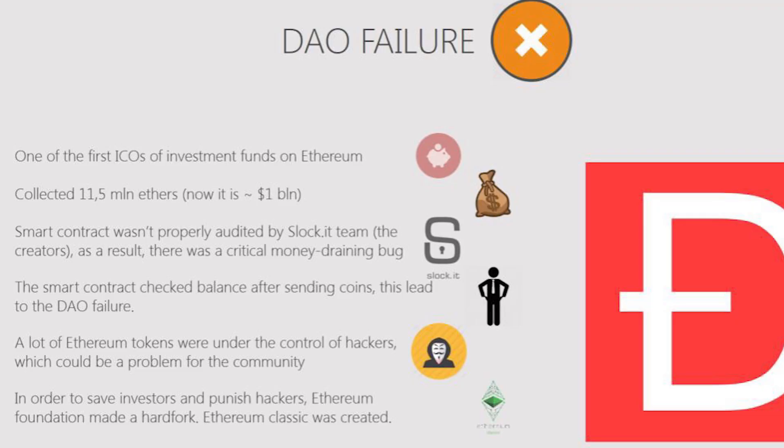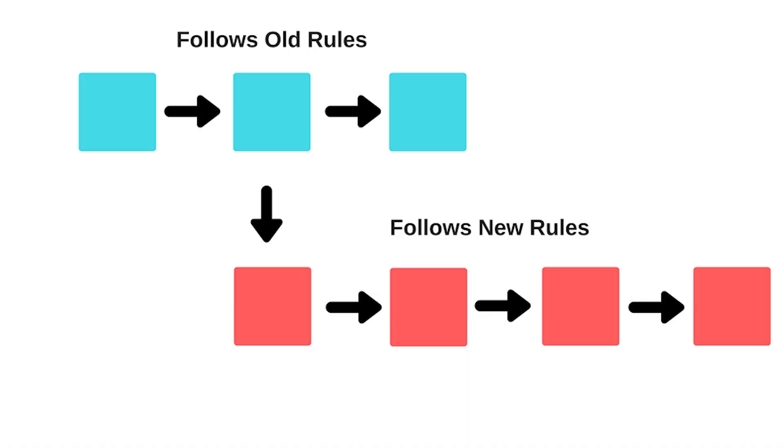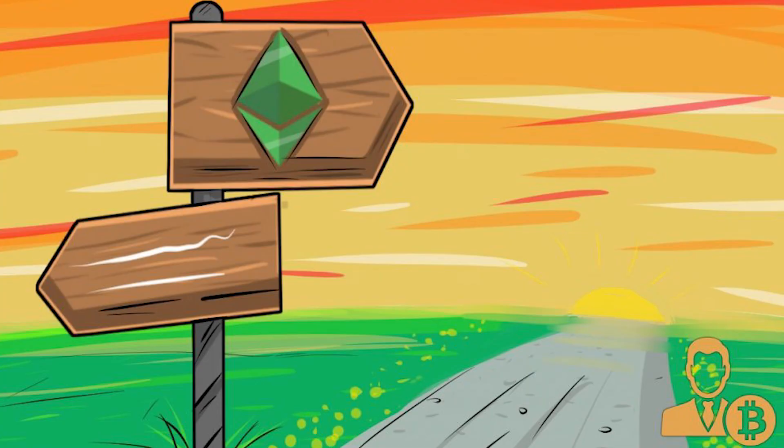The hacker or hackers stole 11.5 million worth of ether, worth approximately 50 million dollars at the time. Two solutions were proposed: the Ethereum community could either create a fork to reverse the illegitimate transactions, or do nothing. The side that decided to do nothing became the original Ethereum blockchain, known as Ethereum Classic.